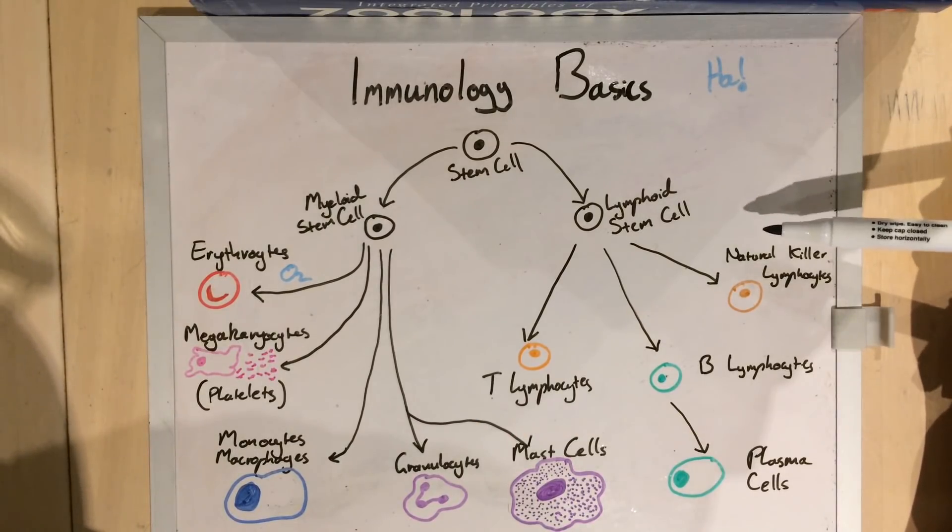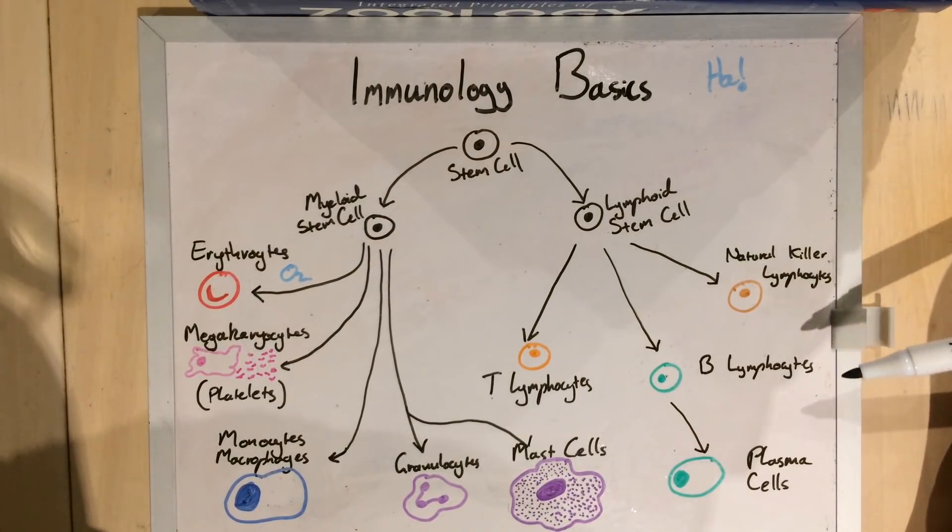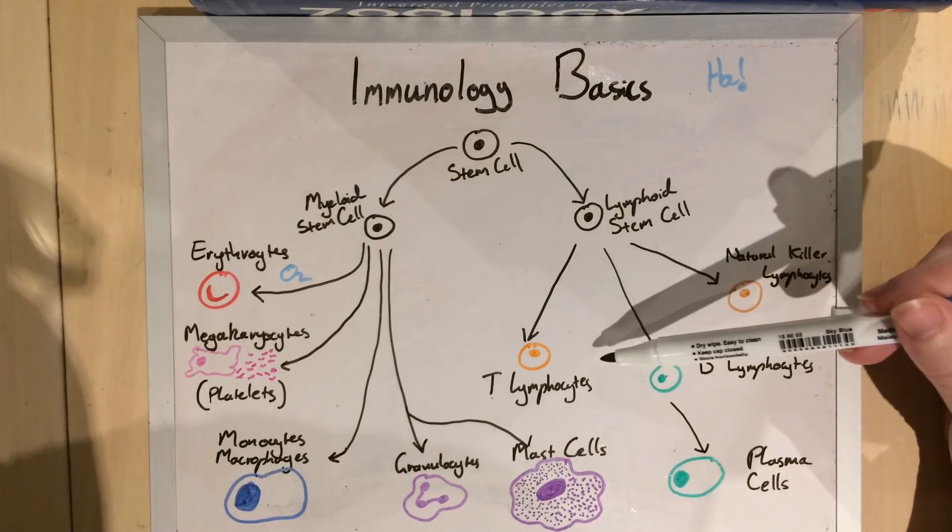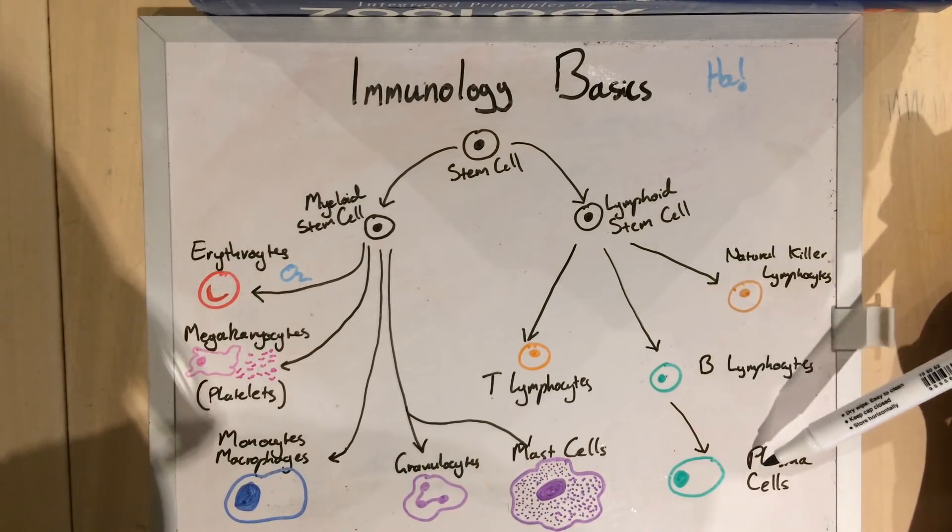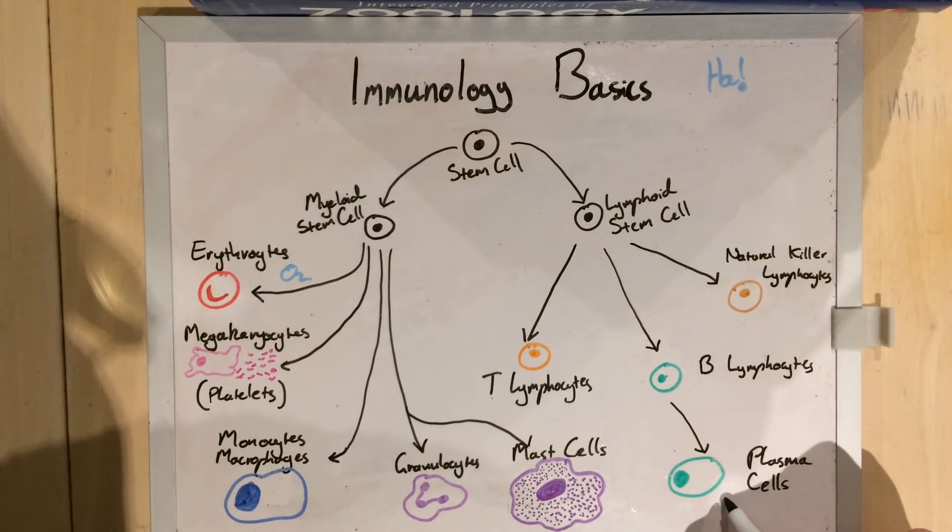On our lymphoid side, we have all of our lymphocytes, including our natural killers, our helper T's, and our B lymphocytes, which will mature to plasma cells when activated. And these are the guys that produce our antibodies and are of particular interest.